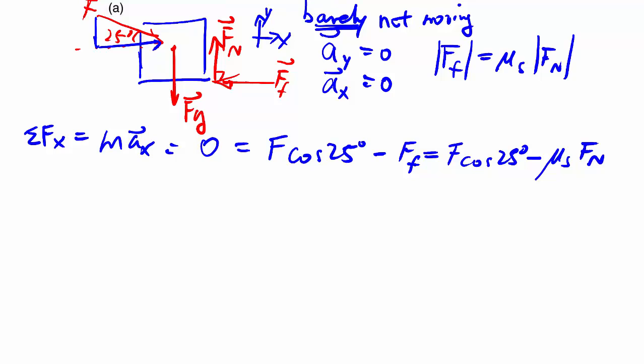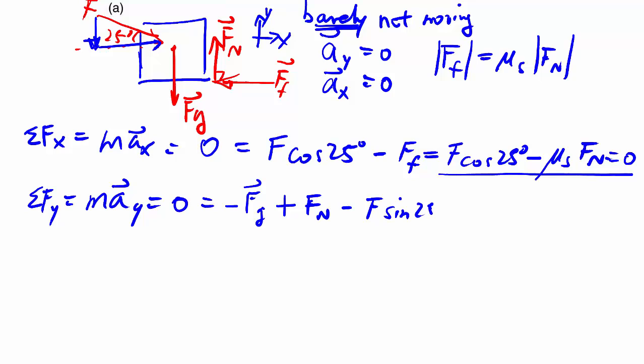Which gives us F cosine 25 minus mu S times FN. Then we have to find out what FN is. This all equals to 0, so once we have FN, hopefully we can solve for F. To get FN, we of course have to look at the Y direction, because that's the direction that FN is in. In this case, AY is 0, so we have 0. How many forces we got? We got the minus FG, which we all know is equal to M times G. And this time it goes straight down, so it coincides with our Y-axis in this case. Plus FN, which pushes upwards, which we'll try and find out. And also, there's a bit of a Y component to the force from my hand. So, downward is going to be sine 25 of the force that we're applying.